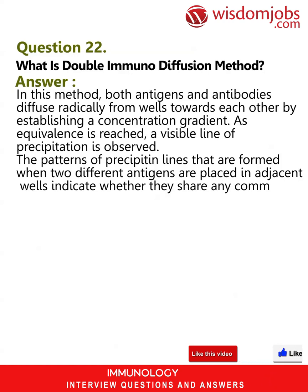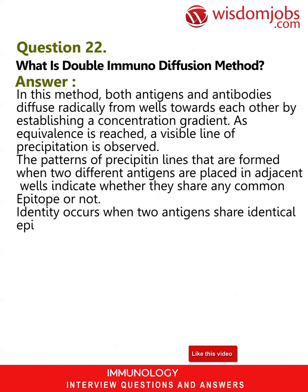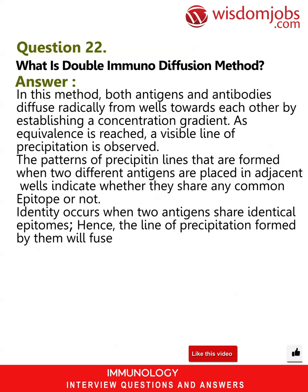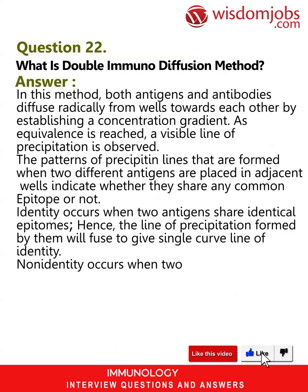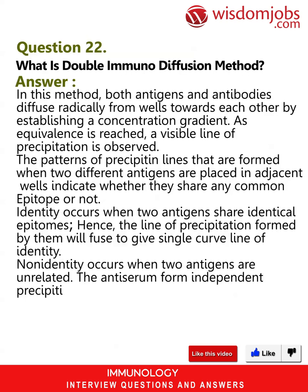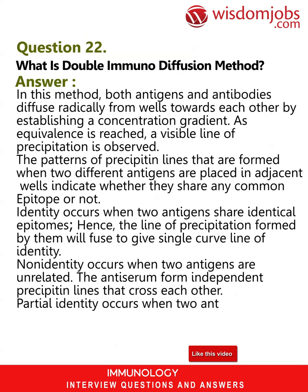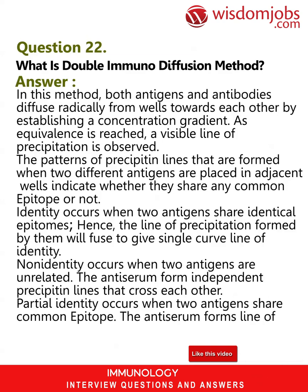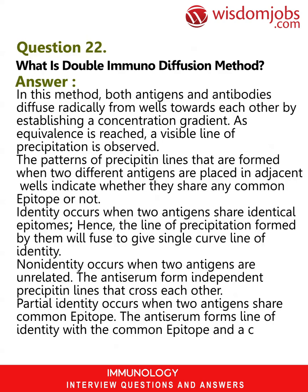Identity occurs when two antigens share identical epitopes; hence the lines of precipitation formed by them will fuse to give a single curved line of identity. Non-identity occurs when two antigens are unrelated; the antiserum forms independent precipitin lines that cross each other. Partial identity occurs when two antigens share a common epitope; the antiserum forms a line of identity with the common epitope and a curved spur with the unique epitope.